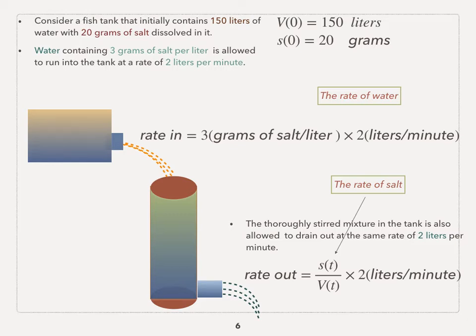In this case, the rate of salt is s(t) over v(t). s(t) is a function that we're looking for, and v(t) is a volume function that we already found. And 2 liters per minute will be the rate of water for rate out. One thing that you want to pay attention to is the rate of water in rate in and rate out are the same.